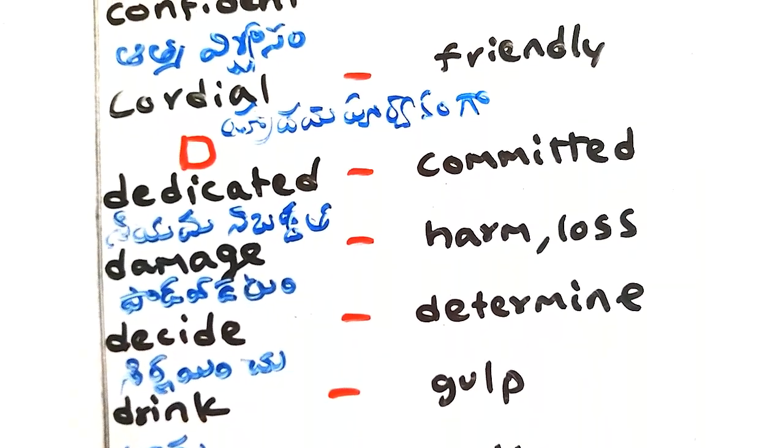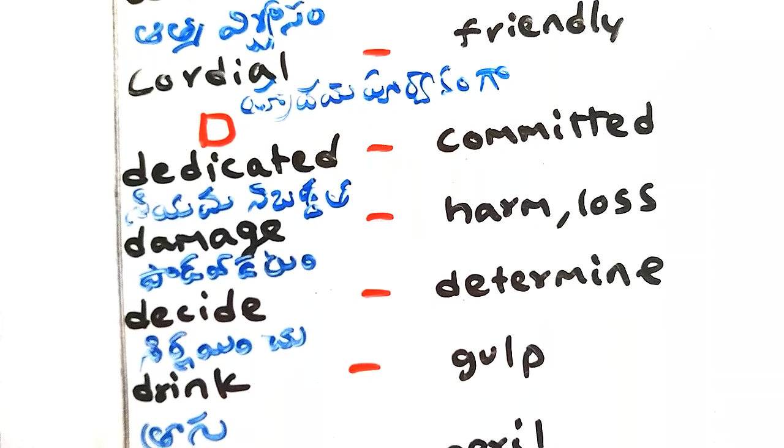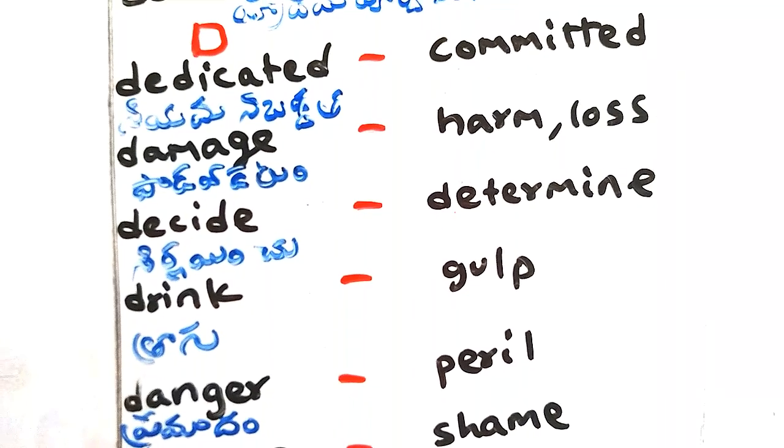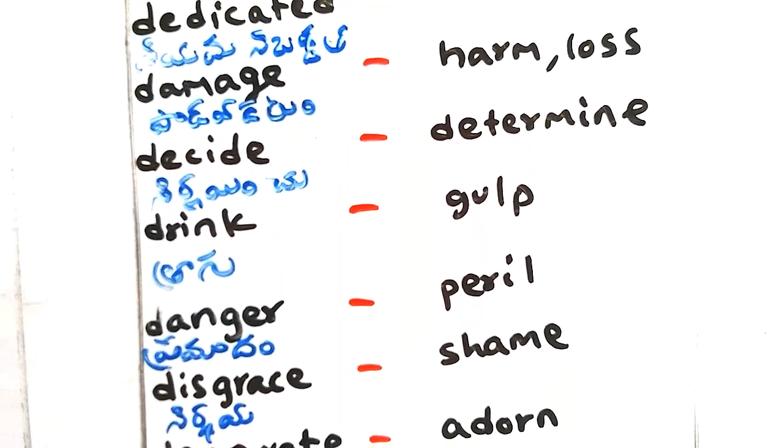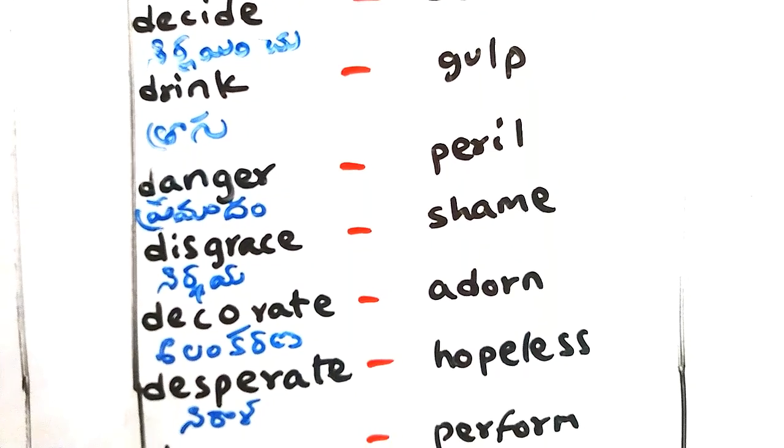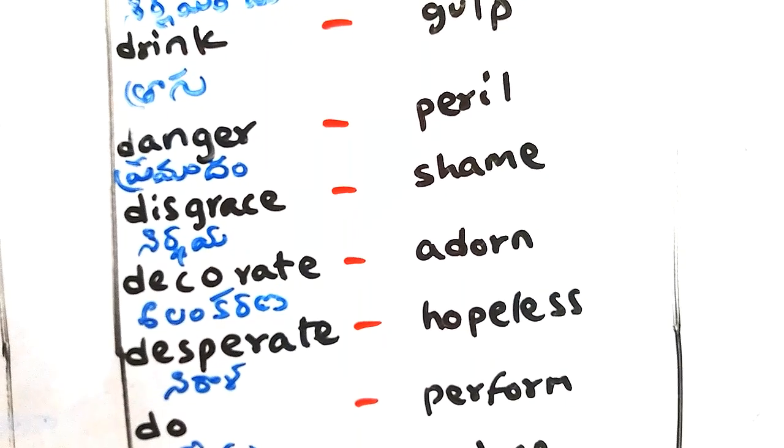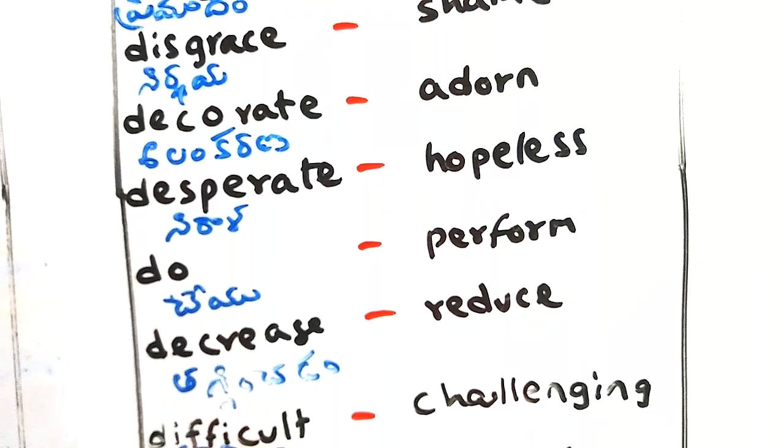Dedicated - niamanepadatakala, committed. Damage - padawatam, harm, loss. Decide - nirnayinchu, determine. Drink - tragu, gulp. Danger - pramadam, peril. Disgrace - nirdaya, shame. Decorate - alankarana, adorn.